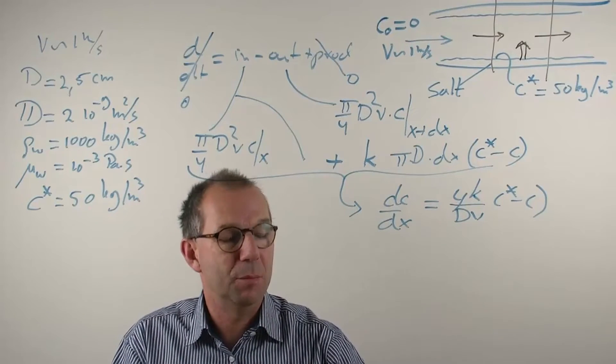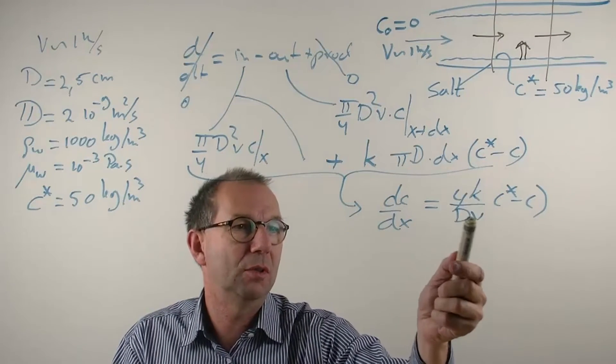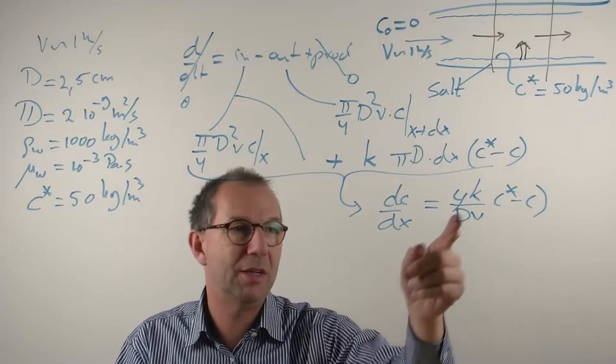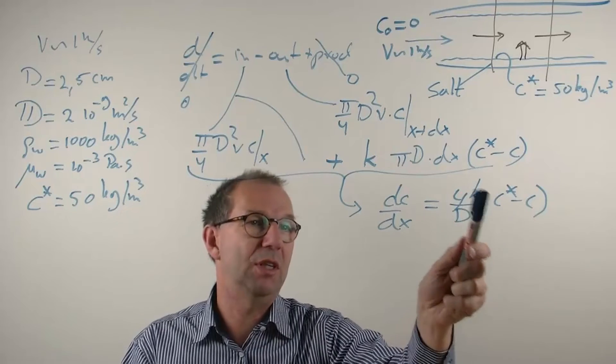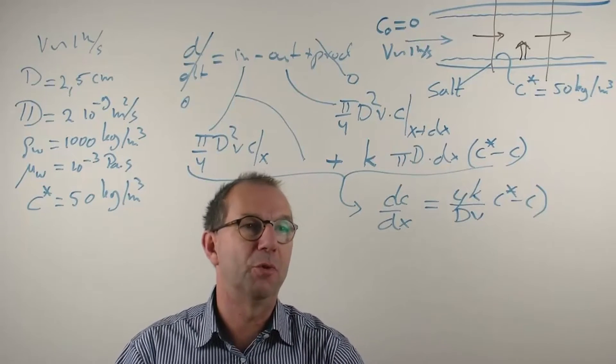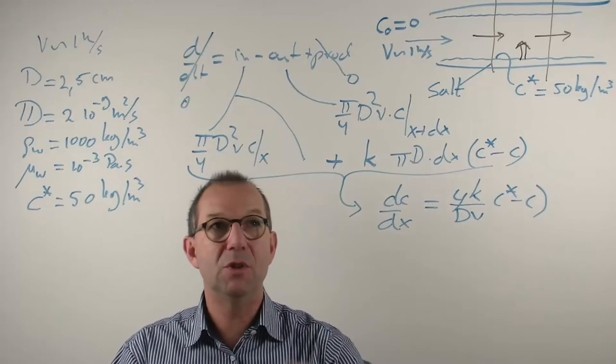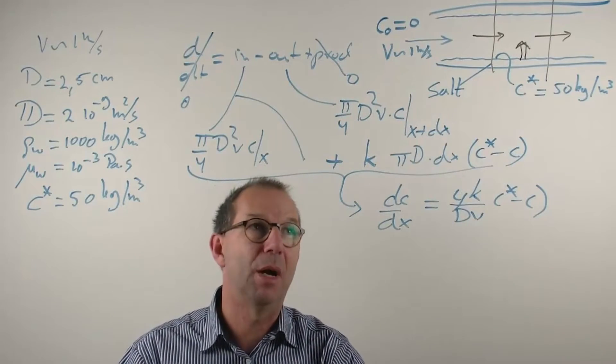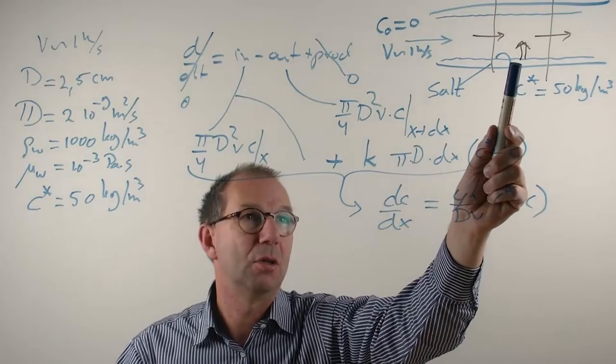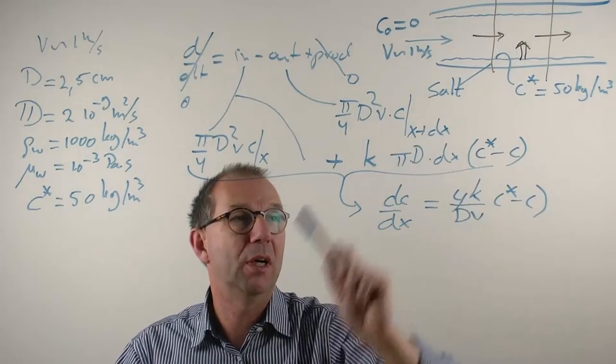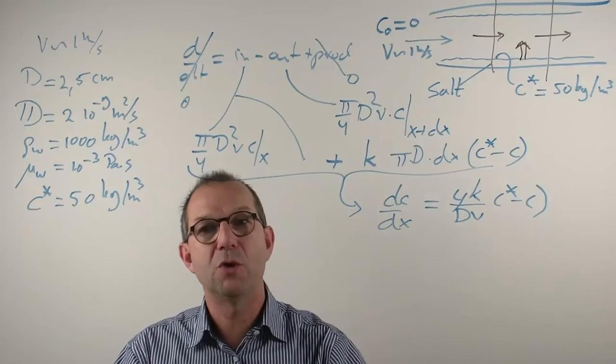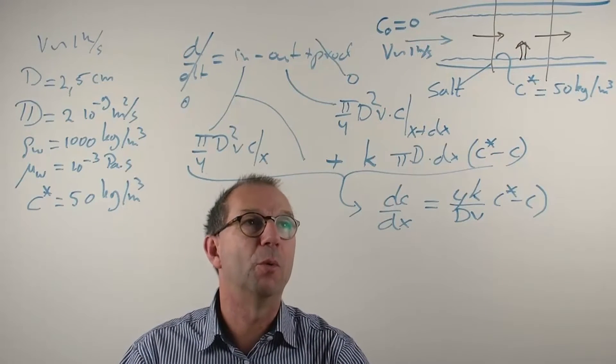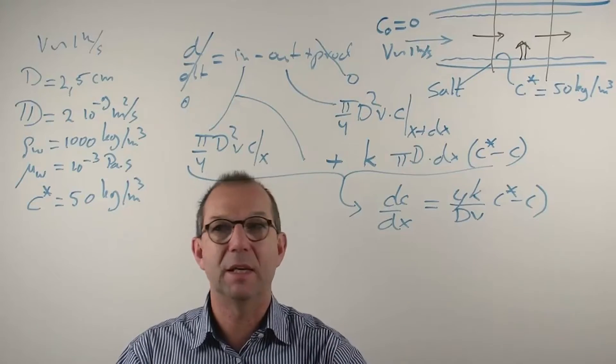This differential equation can be solved, provided we know that this is a given constant. And for that we need to find what k is, because d, v and the 4 are no problem. k can be found if you know what kind of transport mechanism is set up by this flow. And it is flow from the wall into the bulk, and thus a forced convection type of problem is here at hand. And I need to find the k.